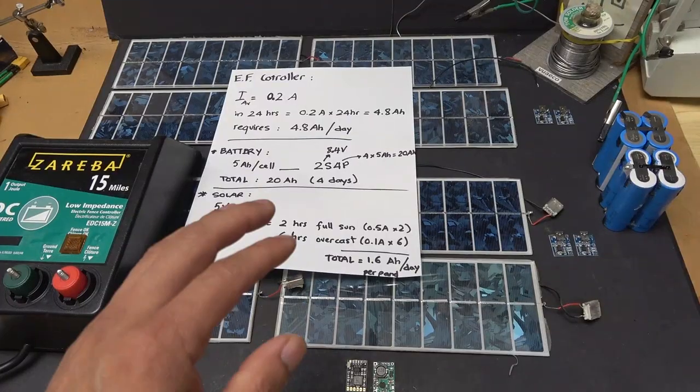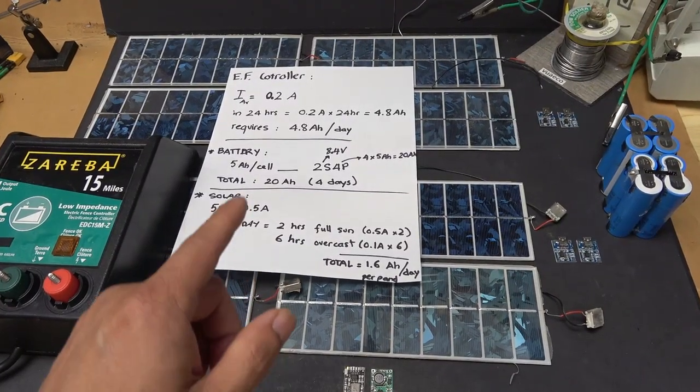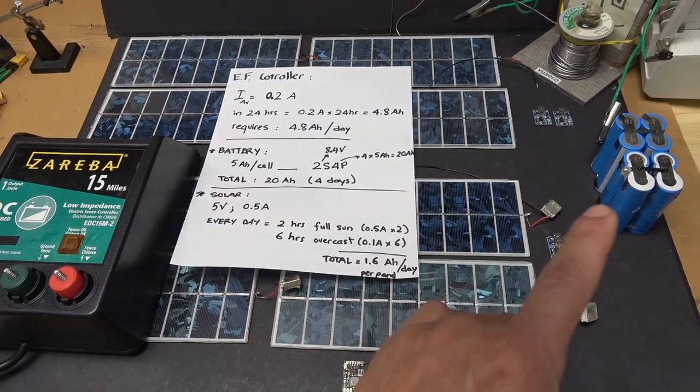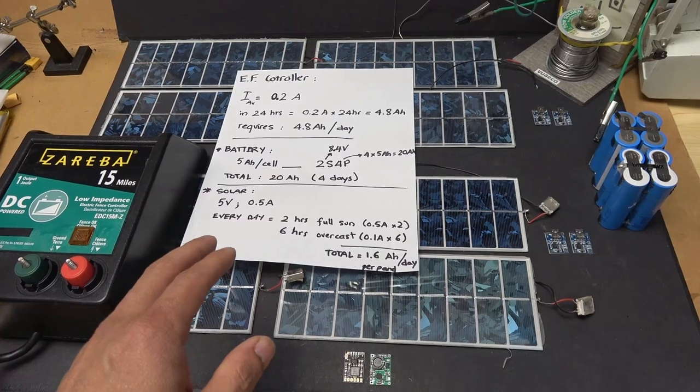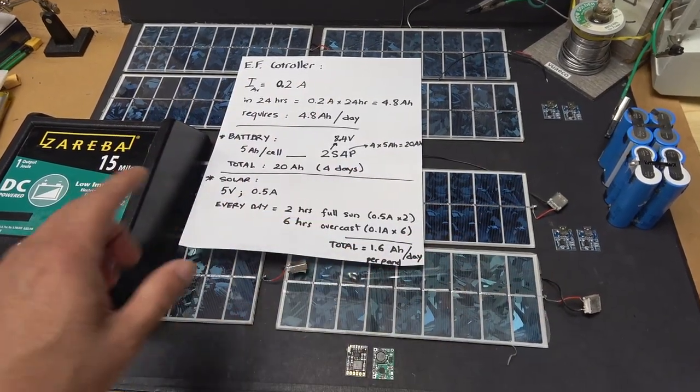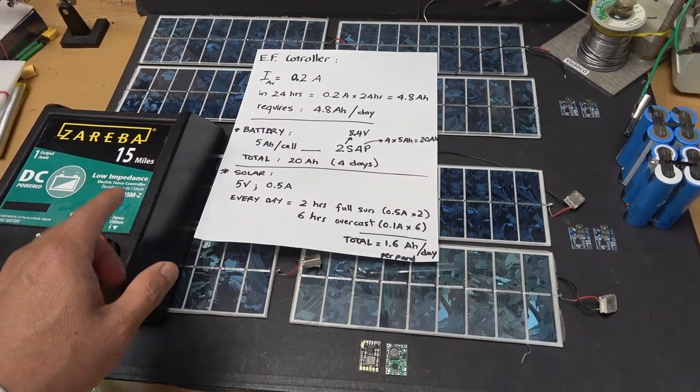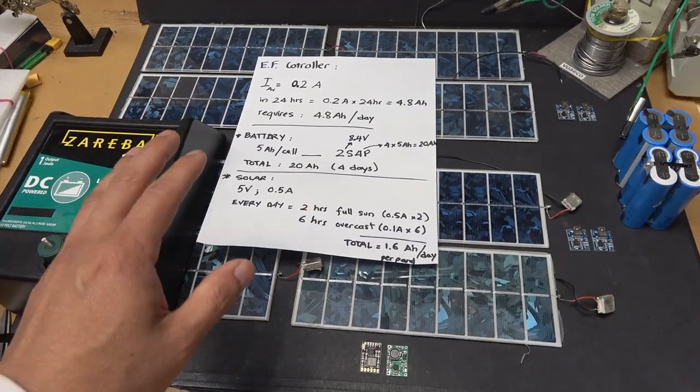So there you have it - how to calculate the power requirements with a solar panel and a battery to run your electronic device. My next step is to put everything together to run my electric fan. Stay tuned and I will see you in the next video.